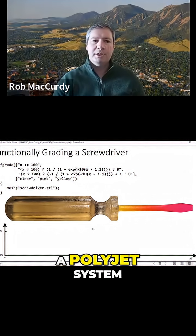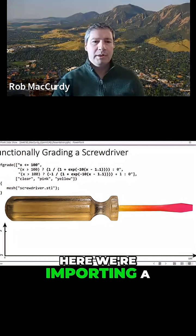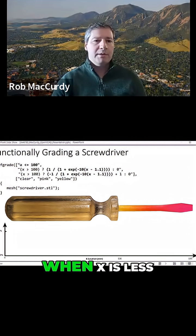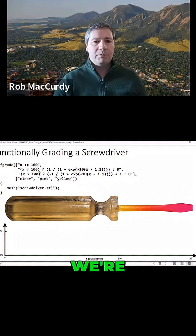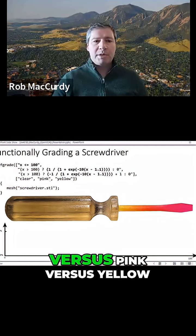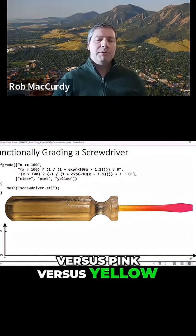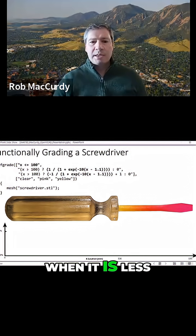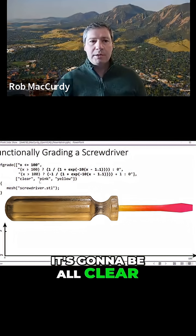Another example, this is fabricated on a PolyJet system. Here we're importing a screwdriver STL as a mesh, and then saying that when X is less than 100, we're with some probability gonna be clear versus pink versus yellow. So we've basically made the probability 100% that when it is less than 100, it's gonna be all clear.